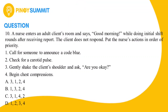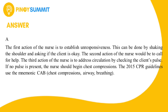To make it easier to find the correct answer, let us remove the two incorrect options, leaving only options A and D. If your answer is letter A, then you are correct. The first action is to establish unresponsiveness by shaking the shoulder and asking if the client is okay. The second action is to call for help. The third action is to check the client's pulse. If no pulse is present, the nurse begins chest compressions. The 2015 CPR guidelines use the mnemonic CAB: Chest compressions, Airway, Breathing.